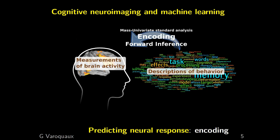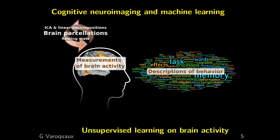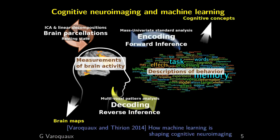This first question — predicting brain activity from descriptions — is the typical way of doing brain mapping. Mass univariate standard analysis is really a statistical model that tries to explain brain measurements from descriptions of behavior. Additionally, we could run unsupervised learning on massive amounts of brain imaging data, which might be useful to find some form of informed data reduction such as brain parcellations — typically done in resting-state fMRI.